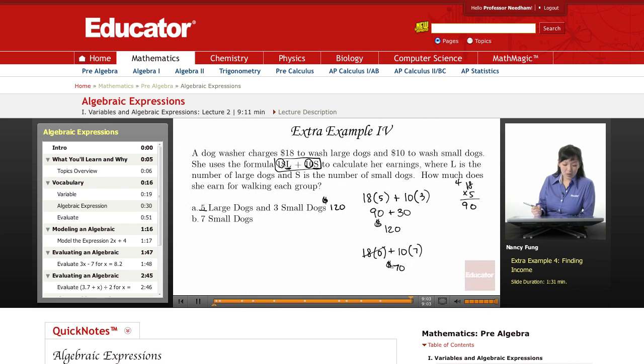So when the dog washer is washing 7 small dogs only, she makes $70. Thank you for watching Educator.com.